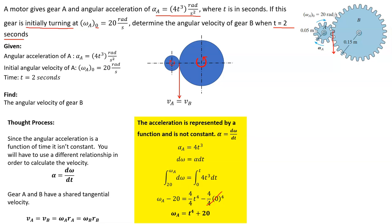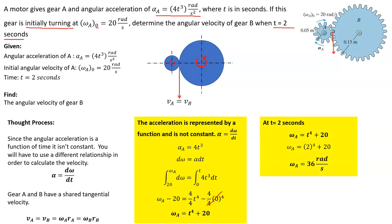Now we have a function for the angular velocity of gear A: omega_A equals T to the 4th plus 20. We can use this to figure out the velocity of A at 2 seconds. Plugging in T equals 2: 2 to the 4th plus 20, which is 16 plus 20, which gives us 36 radians per second.